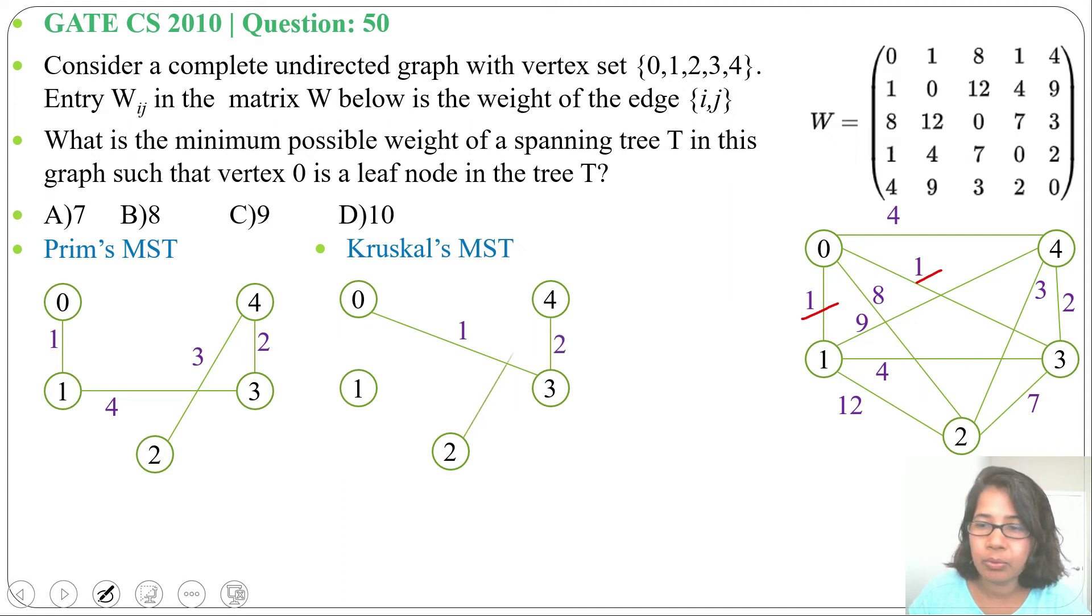So total weight of both minimum spanning trees are 1 plus 2 plus 3 plus 4, which is 10. It's present in option D, so answer will be option D, which is 10.